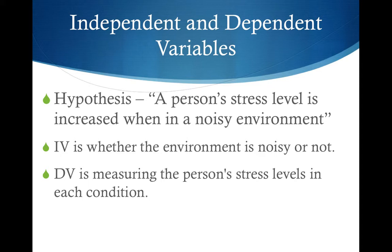In that example, the independent variable is whether the environment is noisy or not — those are the two conditions: one is a noisy environment, the other is a quiet environment. The dependent variable is measuring the person's stress levels in each condition, used to compare the two sets of data.